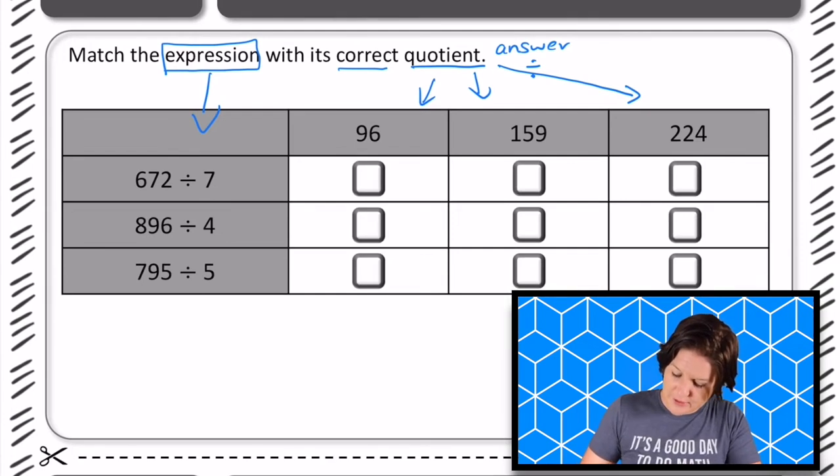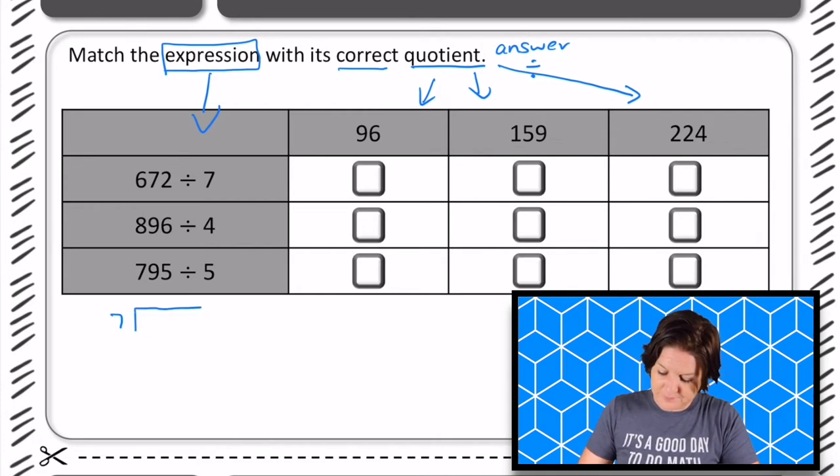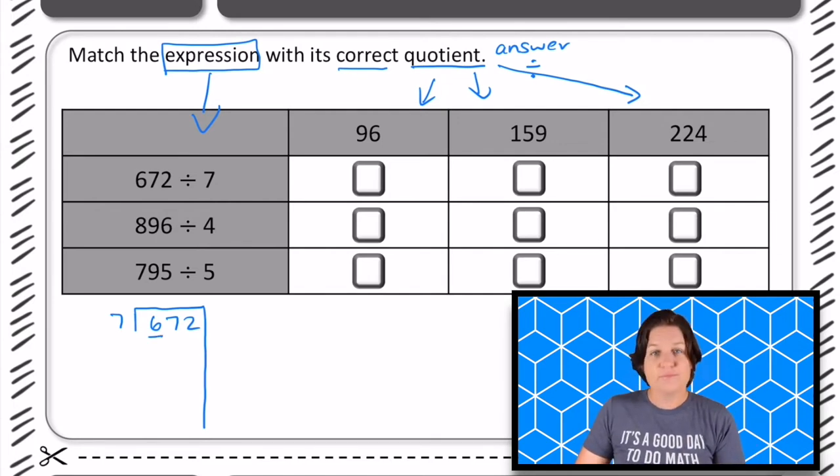For this one, so we've got 672 divided by 7. I like using the partial quotients method, so I'm going to start with that one. So it's like this, I'm bringing the line down. Here's a way that I do it. I say, can 7 go into 6?